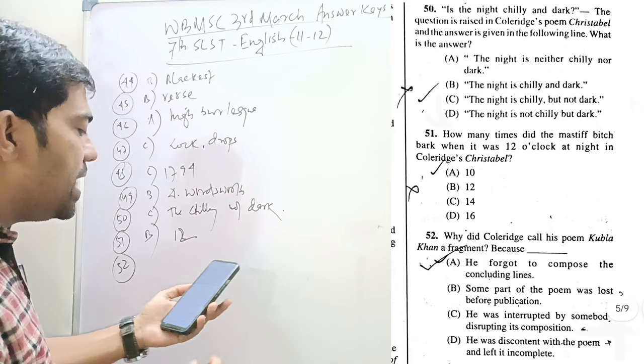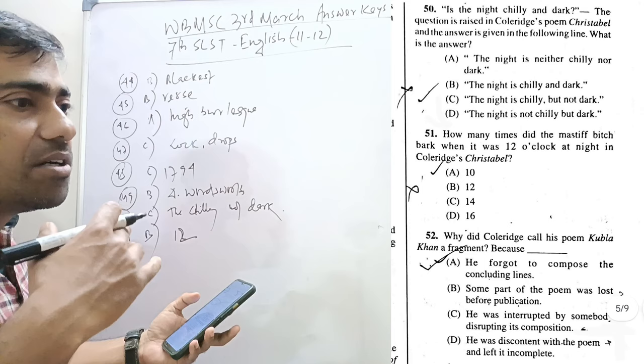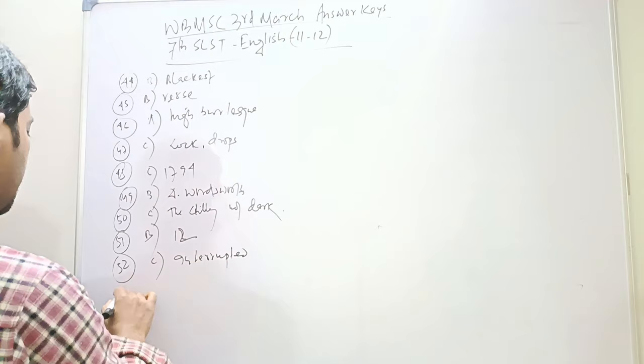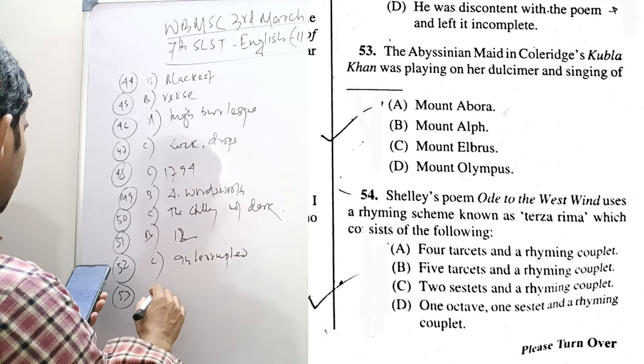Why did Coleridge call his poem Kubla Khan a fragment? Because someone had arrived to meet him and disturbed his flow of thoughts. So, he was interrupted by somebody distracting his composition. Question 53. The Abyssinian maid in Coleridge's Kubla Khan was playing on her dulcimer and singing of Mount Abora.